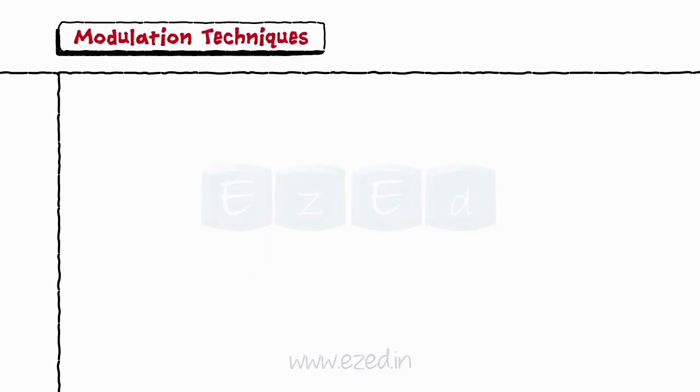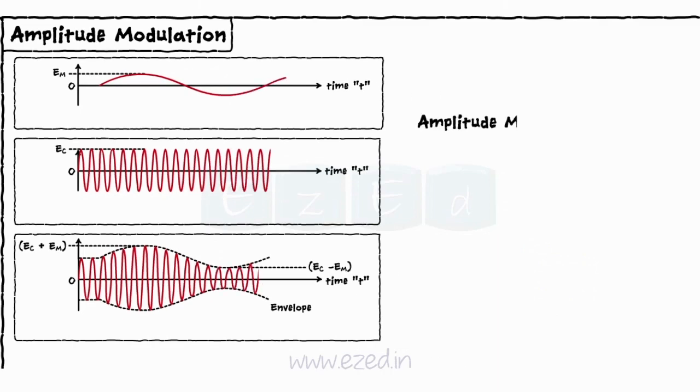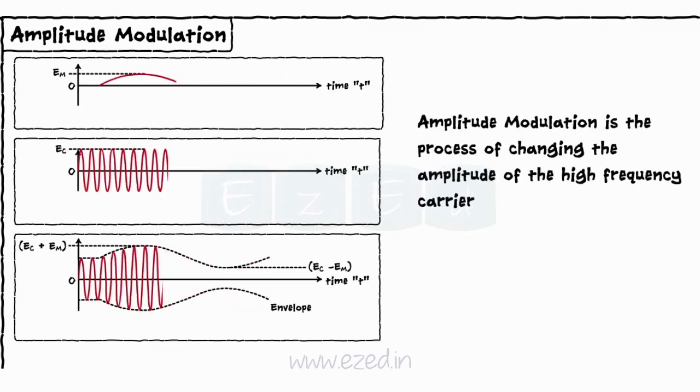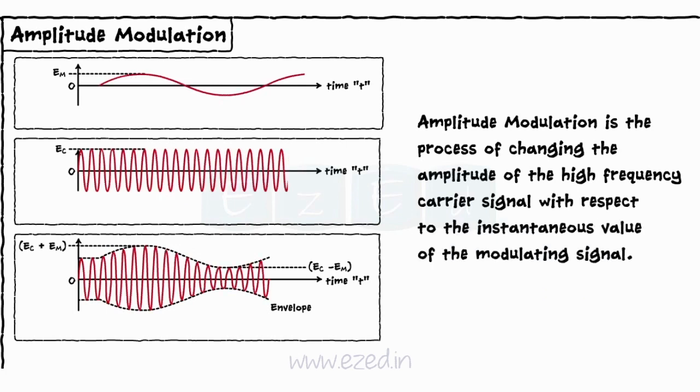Let's see the modulation techniques one by one, starting with amplitude modulation. Amplitude modulation is the process of changing the amplitude of the high-frequency carrier signal with respect to the instantaneous value of the modulating signal.